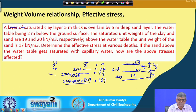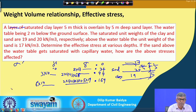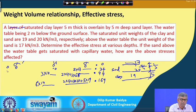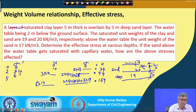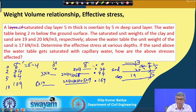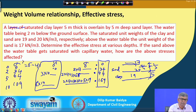Pore water pressure u: at surface = 0; at water table = 0; at 5 m depth = 3×10 = 30 kPa; at 10 m depth = 8×10 = 80 kPa. Effective stress sigma' = sigma − u: at surface = 0; at 2 m = 34 kPa; at 5 m = 94 − 30 = 64 kPa; at 10 m = 189 − 80 = 109 kPa. So sigma column, u column, and sigma' column give us the effective stress distribution.